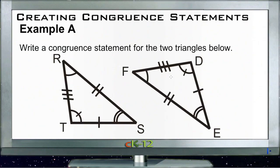Let's take a look at the example questions for creating congruent statements. Our first example A asks us to write a congruent statement for the two triangles below. Remember, a congruent statement specifically tells us two triangles are congruent but also tells us the order in which the angles appear in those triangles so the angles are corresponding.